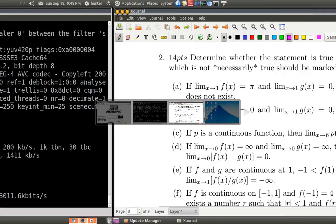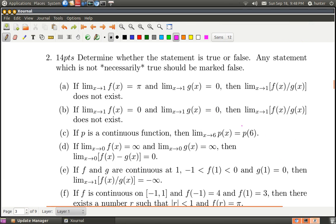Let's take a look at question 2 from the practice exam. It's a true false question. Let's look at this first thing. It says if the limit as x goes to 1 of f(x) is pi and the limit as x goes to 1 of g(x) is 0, then the limit as x goes to 1 of f(x)/g(x) does not exist.